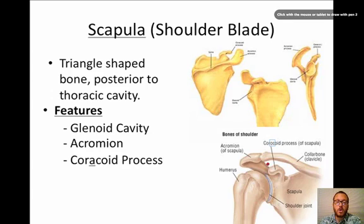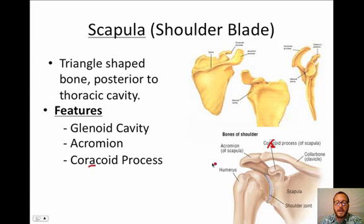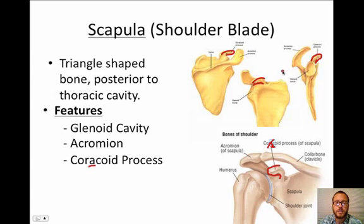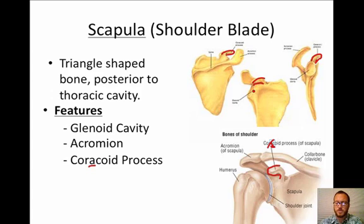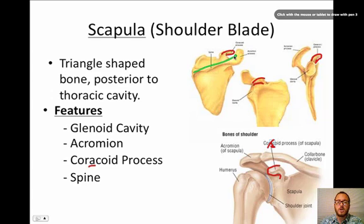Next is the coracoid process — note it's spelled with an 'a', not an 'o'. The coracoid process is this little projection right there, visible here in front as well. A lot of people confuse it with the acromion, but they are two different processes. The coracoid process is the point of attachment for your pectoralis muscles. When you do a push-up and bring your shoulders forward, the coracoid process is getting pulled forward. It allows your shoulders to move back and forward, and we'll learn many muscles attached to it, including the coracobrachialis.